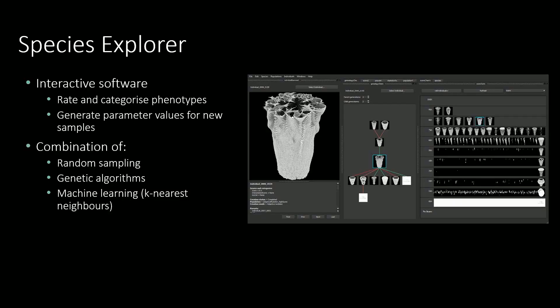Another thing we need to mention is Species Explorer — software that I've been developing over a number of years that forms a key part of my artistic practice. It gives an interface to evaluate the results of a generative system, assigning subjective ratings and categories to images. You can then use that data with a number of different methods to choose parameter values for new individuals to generate, including random sampling, genetic algorithms such as mutation and crossbreeding, and machine learning methods that try to predict fitness values at new points in the genotype space and use Monte Carlo sampling to select new parameter values.